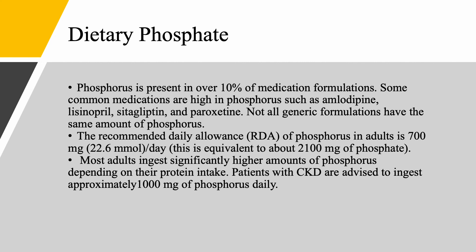The recommended daily allowance (RDA) of phosphorus in adults — measured as phosphorus, not phosphate — is 700 milligrams or 22.6 millimoles per day, equivalent to about 2,100 milligrams of phosphate. Most adults ingest significantly higher amounts than this minimum, depending on their protein intake. Patients with chronic kidney disease are advised to ingest about 1,000 milligrams of phosphorus per day. We don't want to restrict more than that because it would lead to protein restriction and then malnutrition, which is worse than hyperphosphatemia. I'll end here, and in the next lecture we'll talk about phosphate homeostasis. See you then.